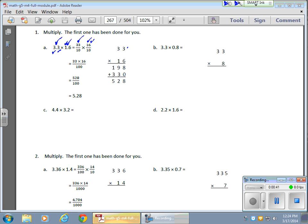I multiply my 33 and my 16, I get 528. And I multiply my 10 by my 10, and I get 100. And now it all comes back around 5 and 28 hundredths. Okay, so 528 hundredths gives me 5 and 28 hundredths.